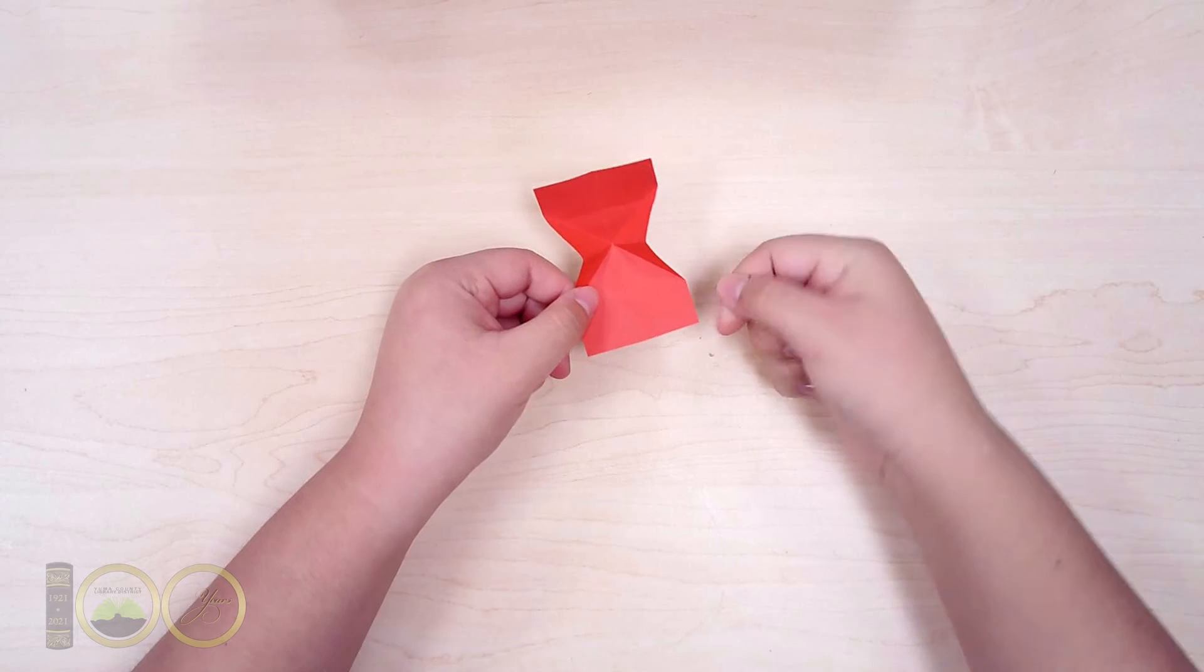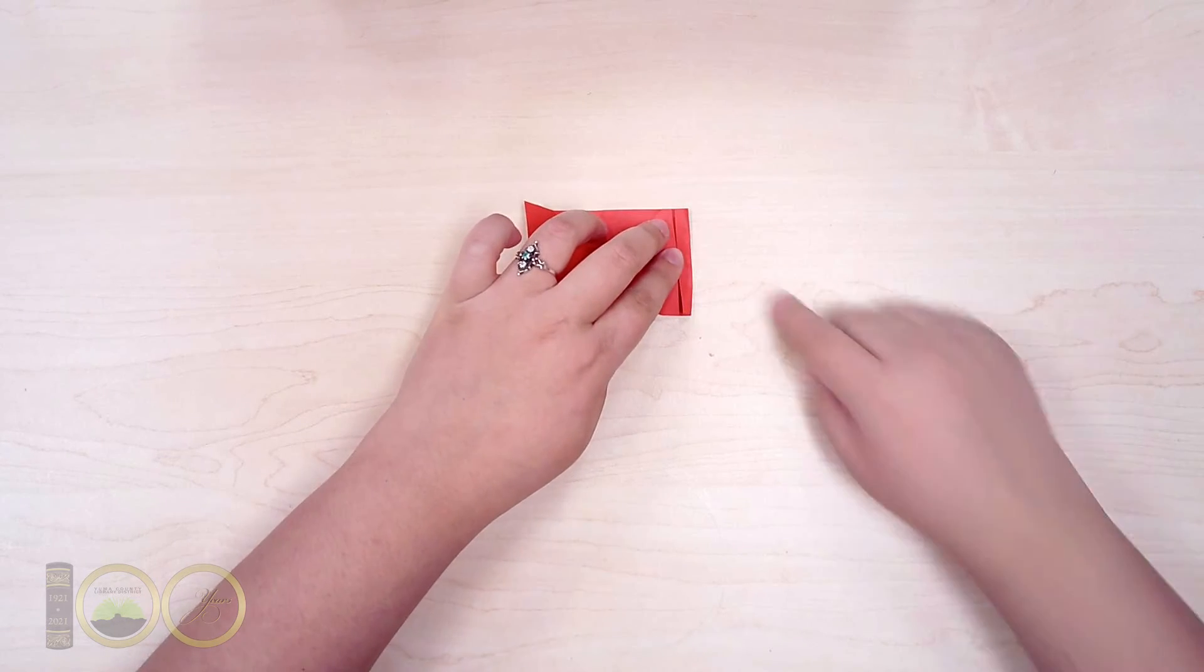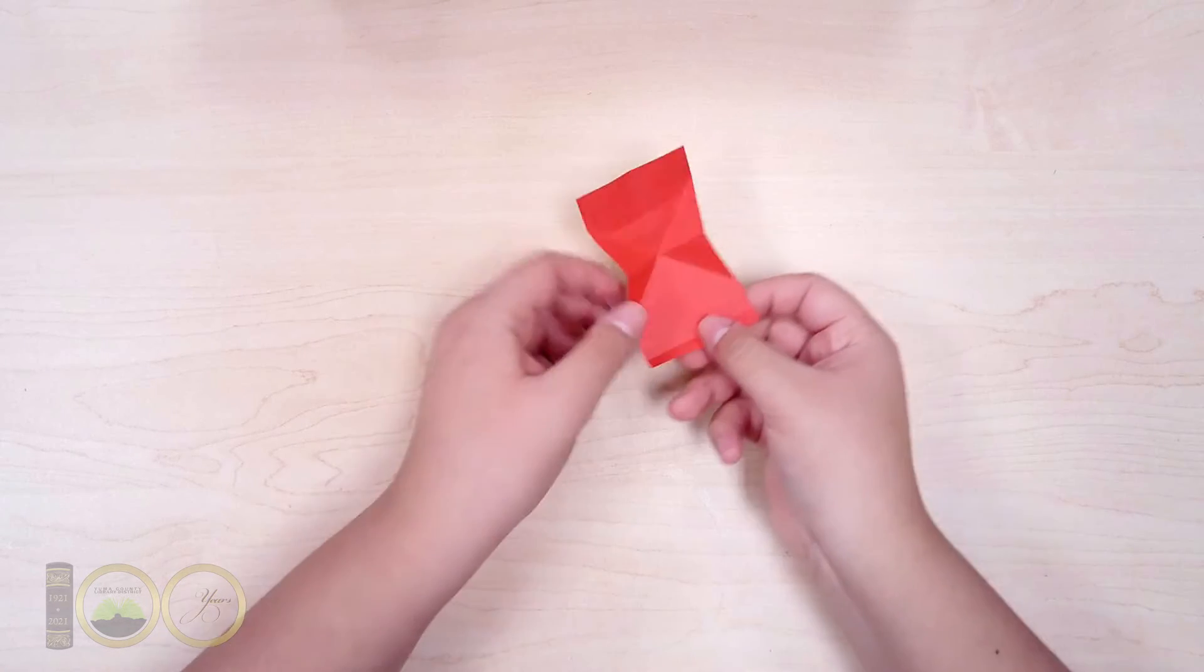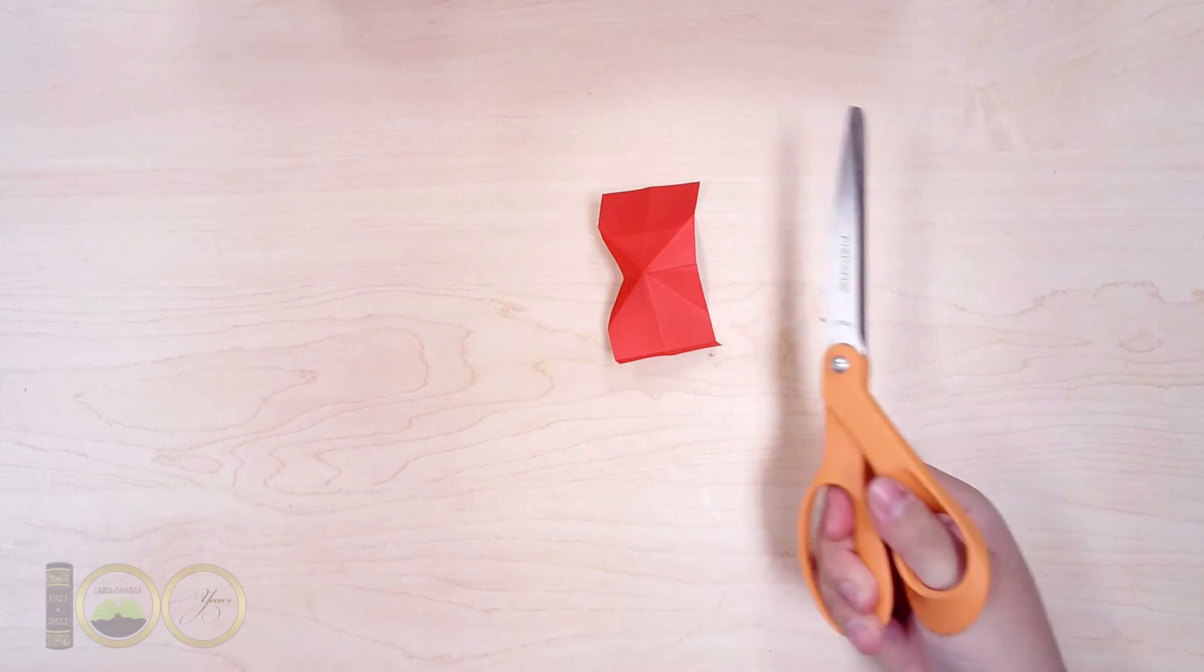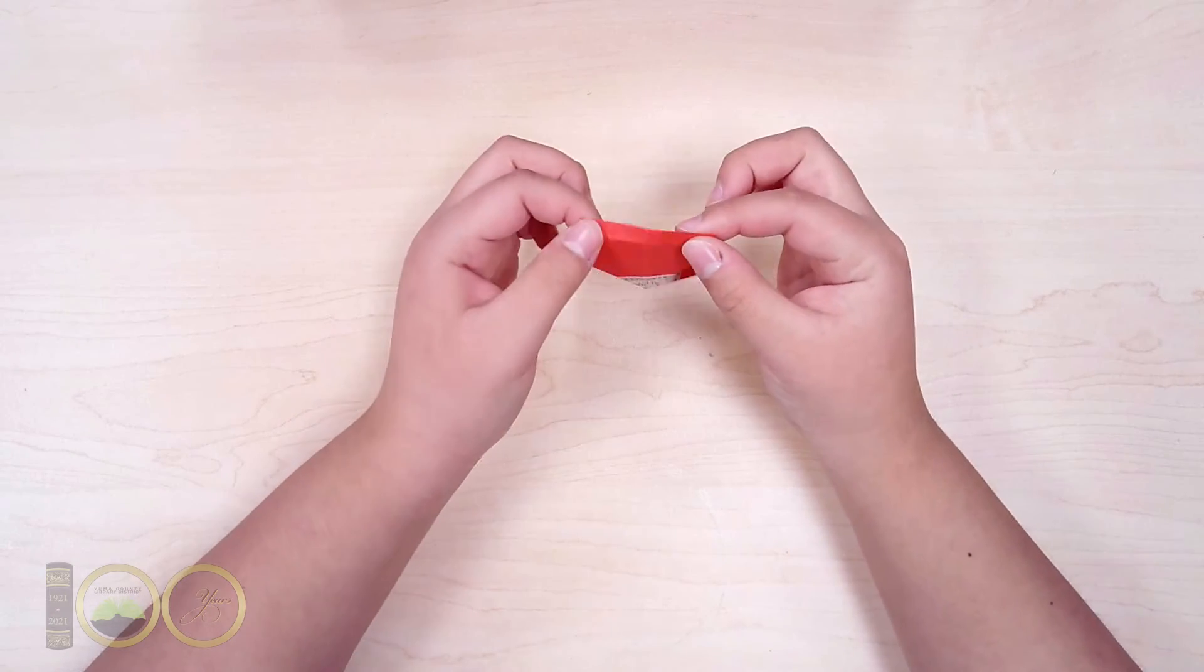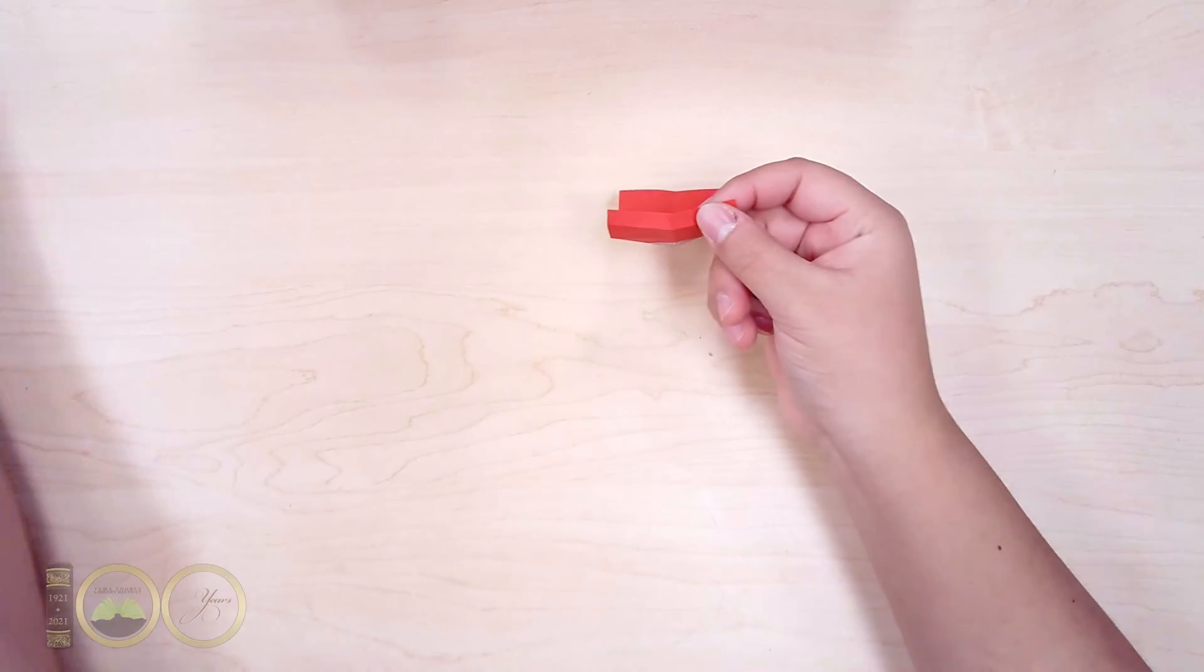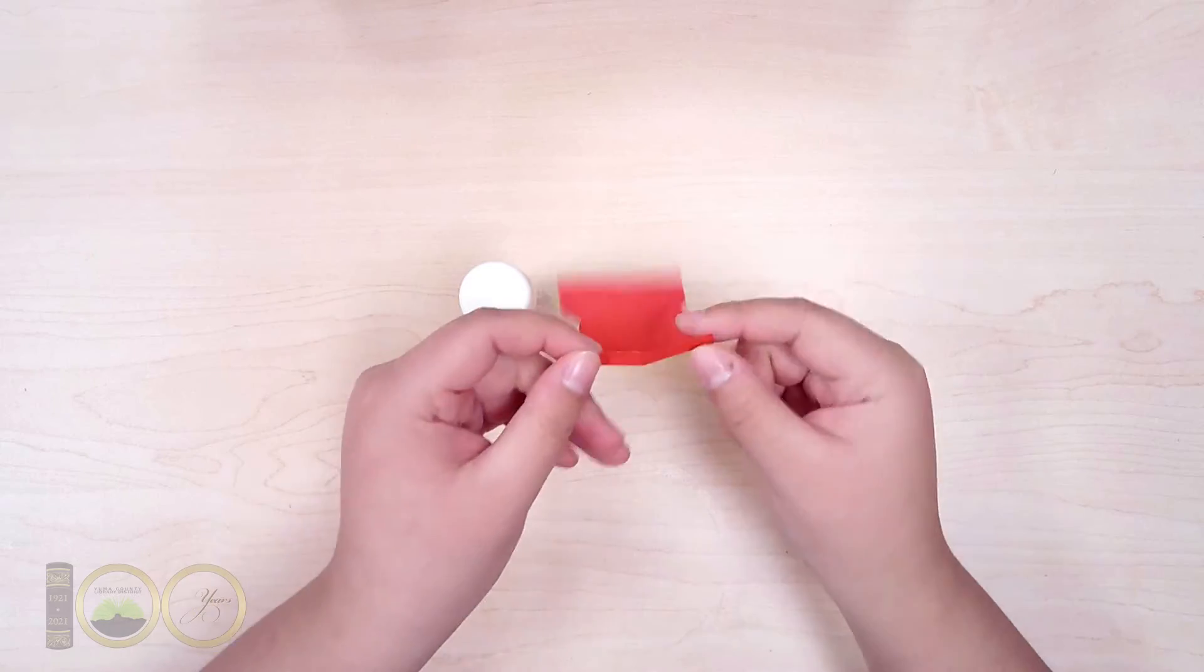Fold the bottom edge up about one-fourth of an inch, crease, then unfold. Cut that small fold vertically in half. Take the cut bottom edges of the paper and bring them slightly towards each other to overlap them. Glue the overlapped pieces together so that there is a slight downward-angled point.